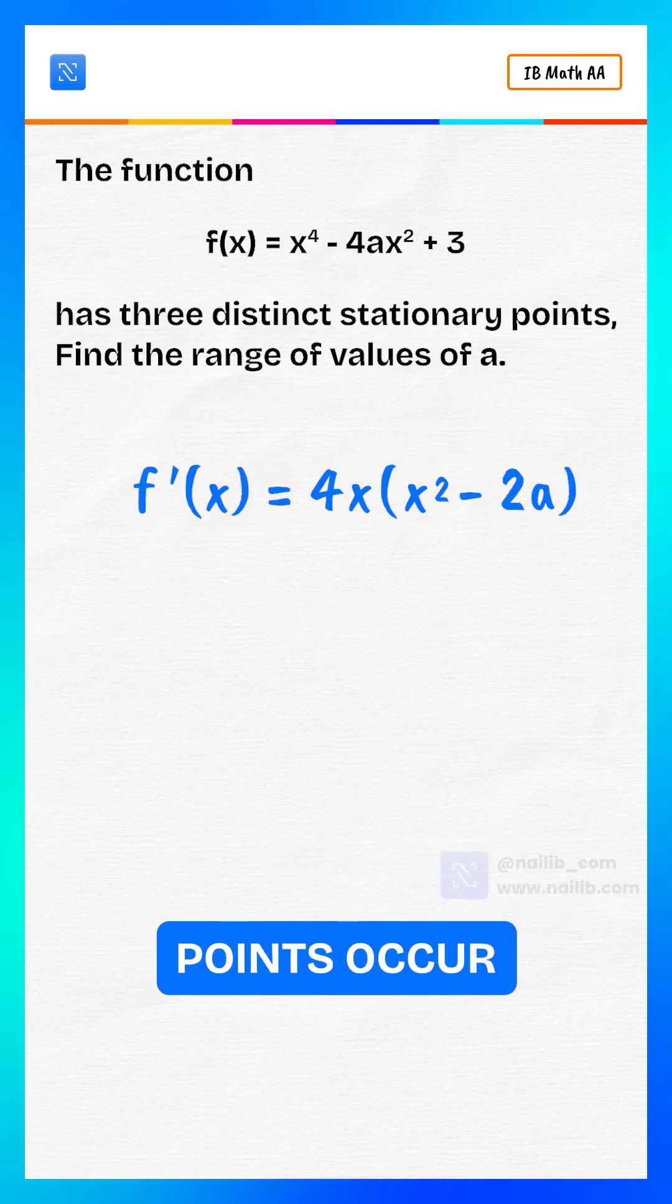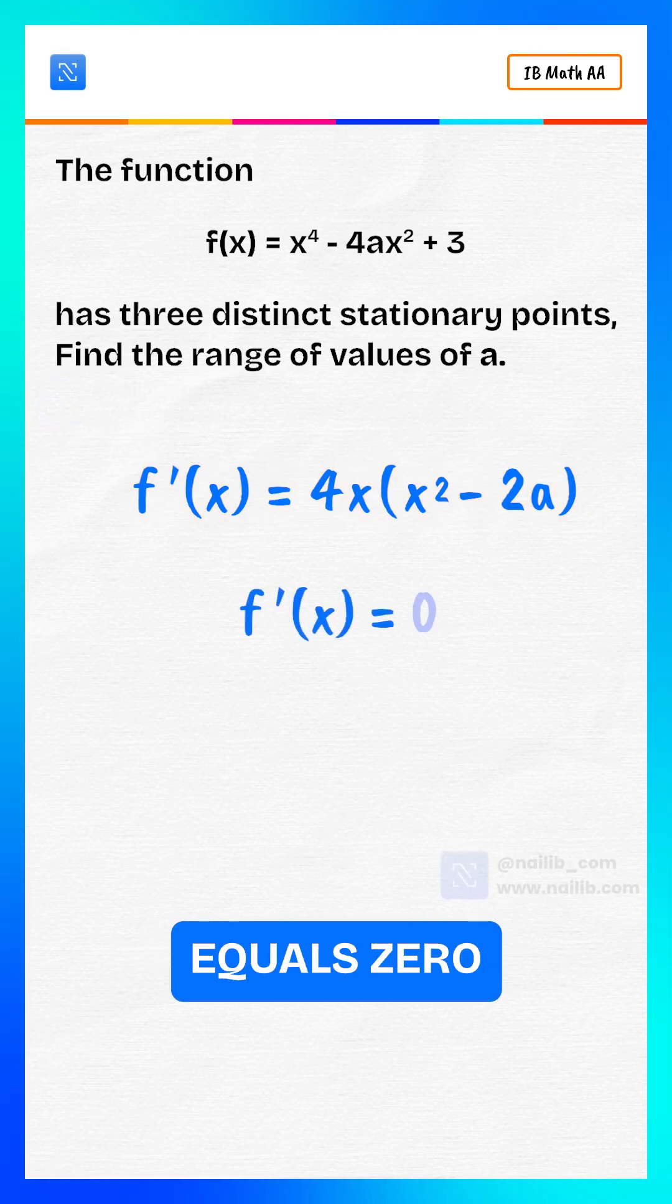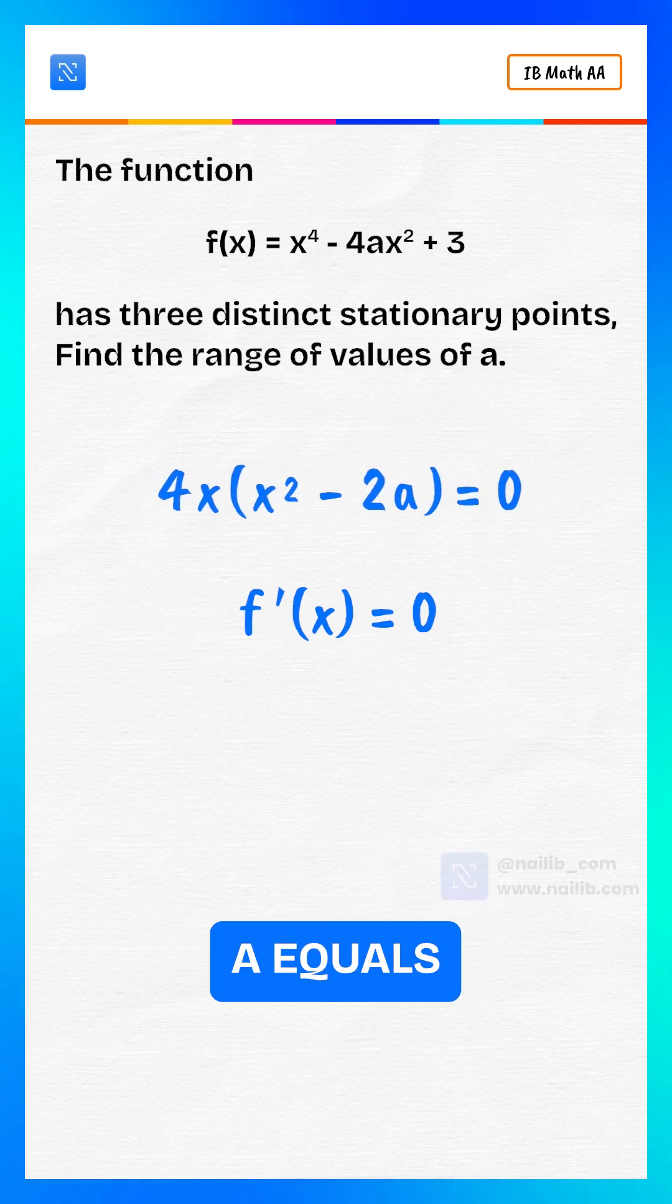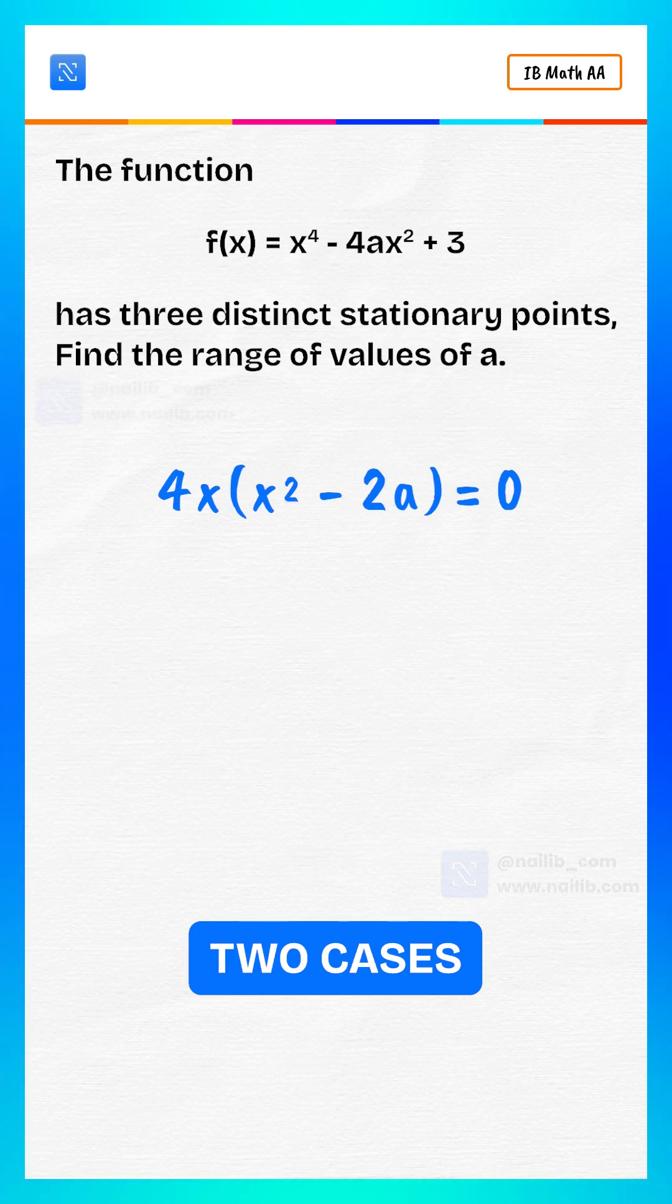Stationary points occur when f prime of x equals zero. So we set 4x times x squared minus 2a equals to zero. This gives two cases.